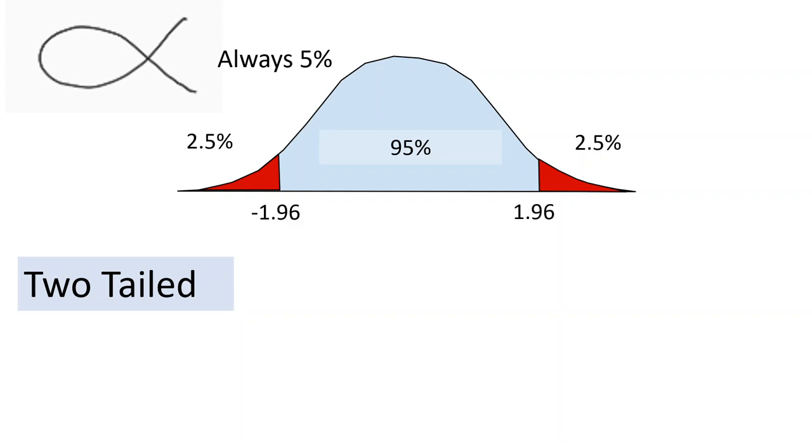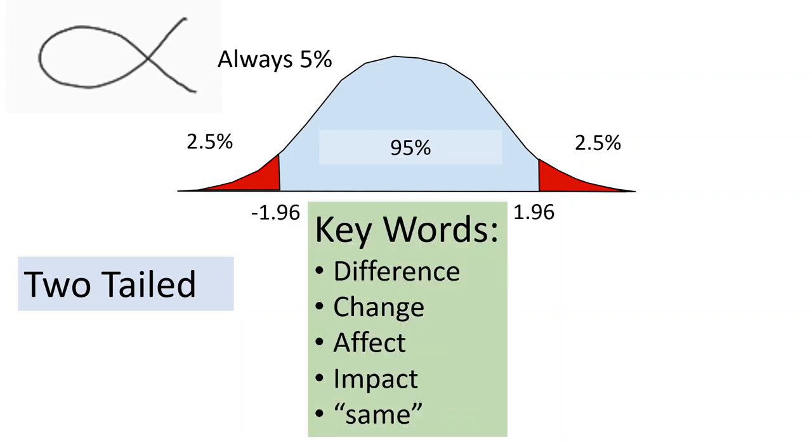So how do we know if we're doing a two-tailed test? Most tests are going to be two-tailed because remember, to do a one-tailed test, you need some really good justification. But we can also tell whether it's two-tailed from the research question. So the research question is going to have keywords in it.